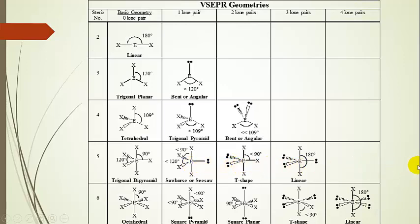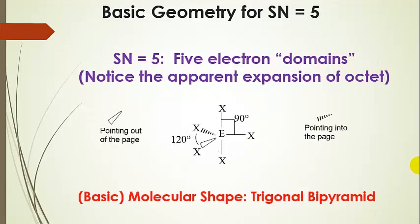There are several other geometries that can be derived from the trigonal bipyramid. Taking a closer look at this basic geometry, we have an apparent expansion of the octet — it looks like we have 10 electrons around the central atom. We also have five bonded atoms in this geometry, and as we're going to find out, all of these atom positions are not equivalent. There are two different bond angles and two different types of atom positions.